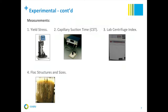Here are the measurements for the four criteria. The first is the shear stress of flocculated materials. The second is capillary suction time, which gives you an index of how fast your flocculated materials dewater. The third is the lab centrifuge index — we operate the lab centrifuge at 3,000 RPM for 2 minutes — which gives a quick index of dewatering speed. The fourth is taking a picture of the floc structure and size so you can visually assess how good your flocs look.